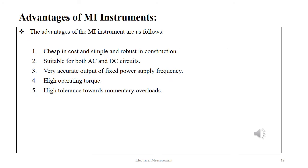The advantages of the MI instrument are as follows: non-uniform scale crowded at the beginning; cheap in cost and simple and robust in construction; suitable for both AC and DC circuits; very accurate output at fixed power supply frequency; and high operating torque with high tolerance towards momentary overloads.